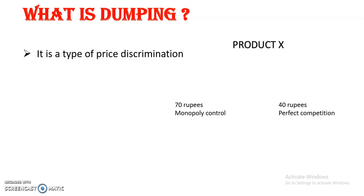Dumping is a type of price discrimination. I have explained this topic in the previous videos also, but let's see what price discrimination is. Price discrimination is the act of selling the same product to different buyers at different prices, in order to maximize sales and profit.